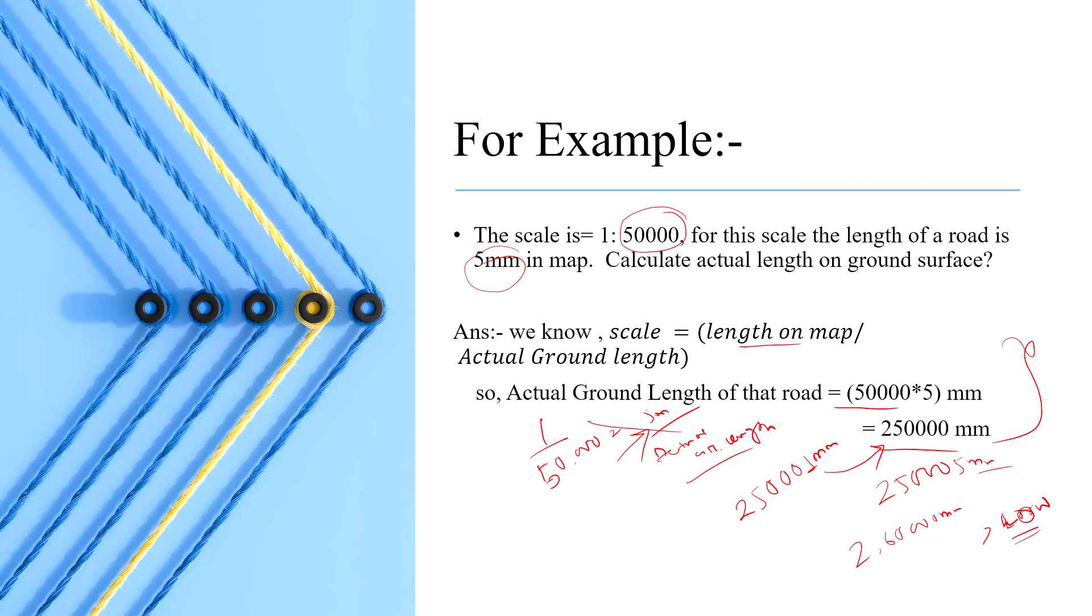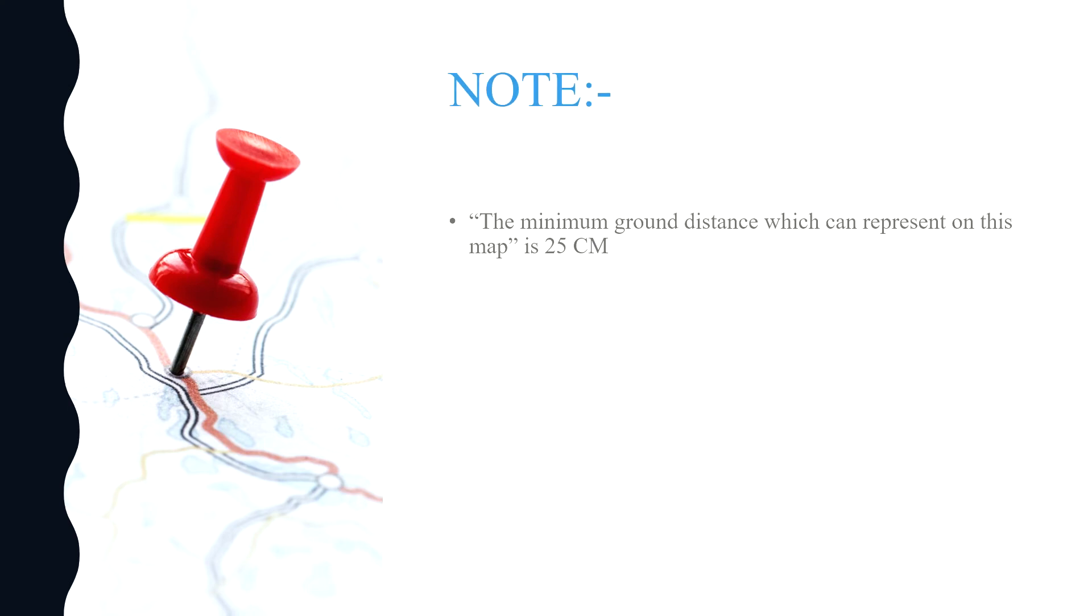That is the minimum ground distance which can represent on this map is 25 cm. This is provided by Survey of India.